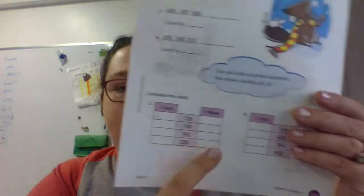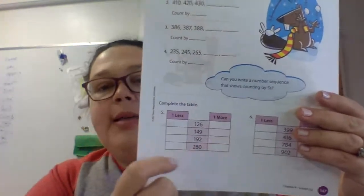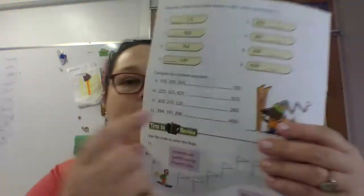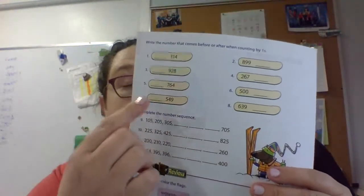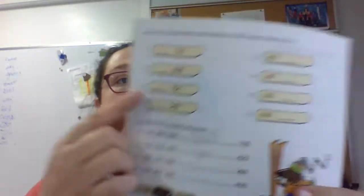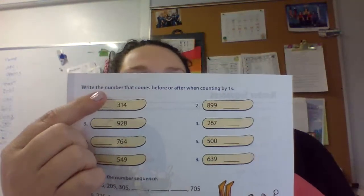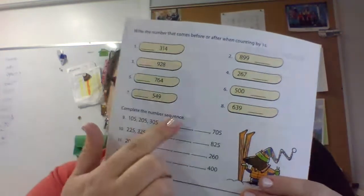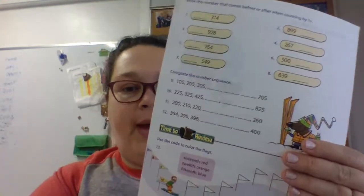So your number sequence is looking at whether it's one more, one less, one more, one less, 10 more, 10 less. Here in this order, this order right here is ones. So one less, one more, one less, one more. And then here, putting them in order, 105, 205, 305. So you're going to just keep going that way.